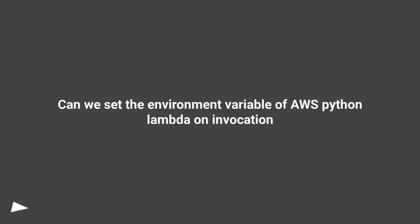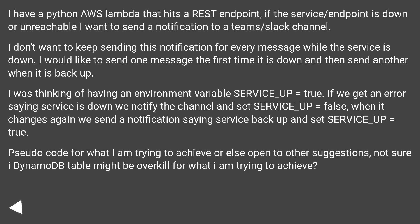Can we set the environment variable of AWS Python Lambda on invocation? I have a Python AWS Lambda that hits a REST endpoint. If the service or endpoint is down or unreachable, I want to send a notification to a Teams or Slack channel. I don't want to keep sending this notification for every message while the service is down — I would like to send one message the first time it is down, and then send another when it is back up.